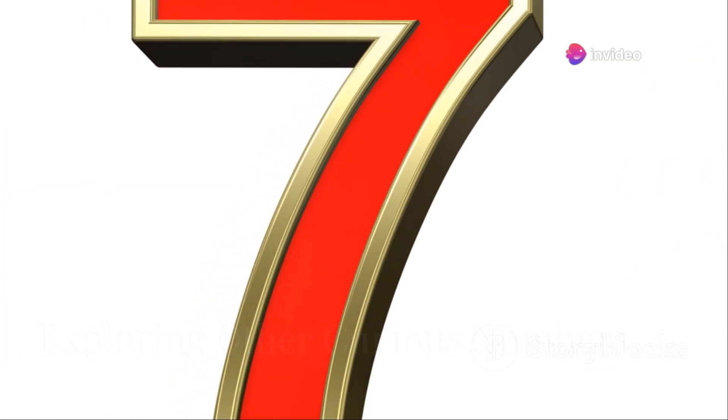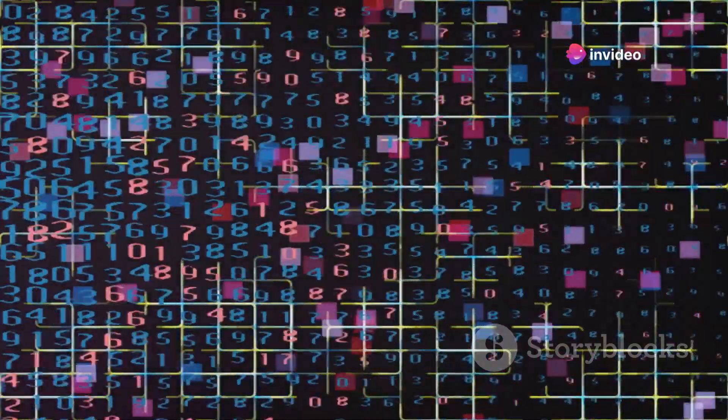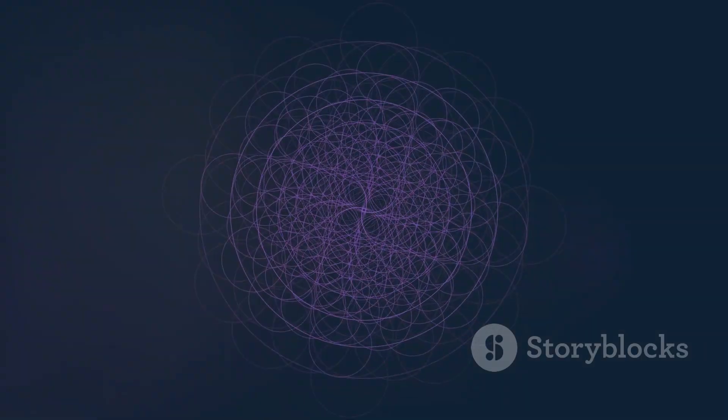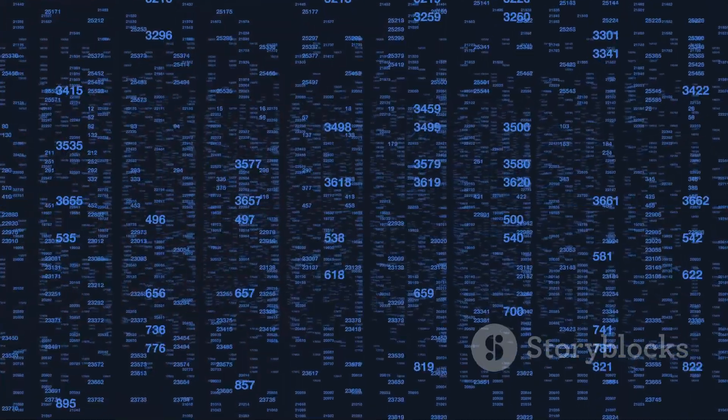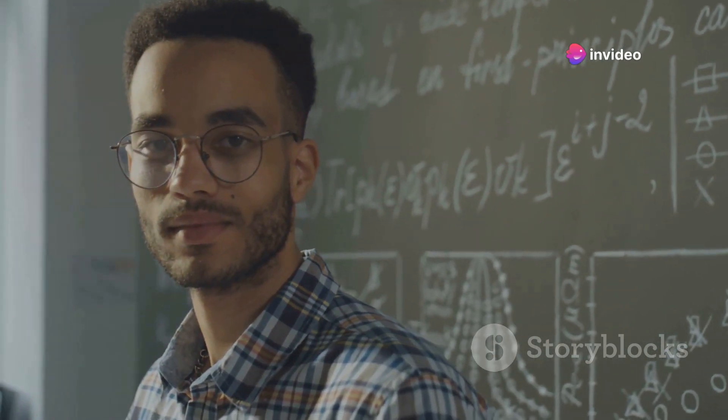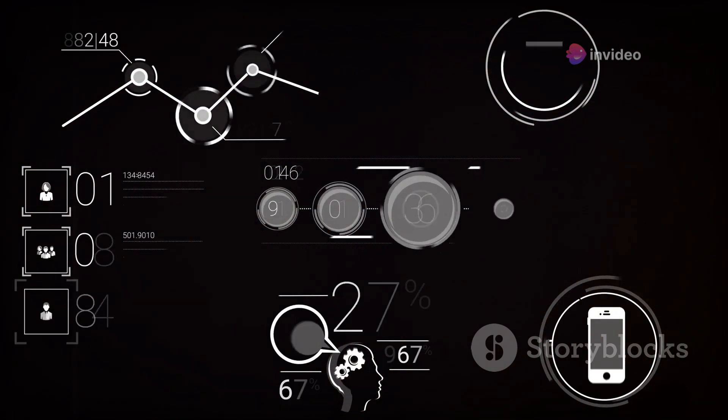While 37 has captured our attention, it's important to remember that it's just one of many numbers with intriguing properties. The world of mathematics is full of curious numbers, each with its own unique characteristics and patterns. Take pi, for example, an irrational number that represents the ratio of a circle's circumference to its diameter. Pi's decimal representation goes on infinitely without repeating, making it a source of endless fascination for mathematicians and enthusiasts alike.